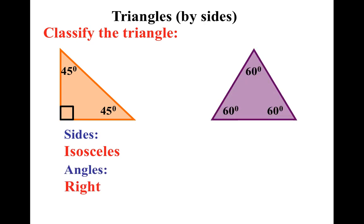All right, you guys try this one. Hopefully you noticed that all three sides are the same. So that would make it an equilateral, and all three angles are under 90 degrees. They're all acute. So it would be an acute triangle.